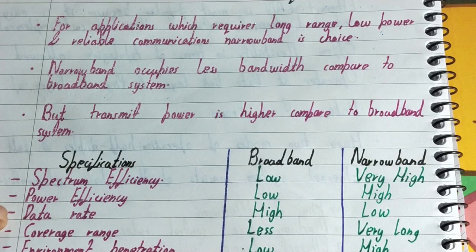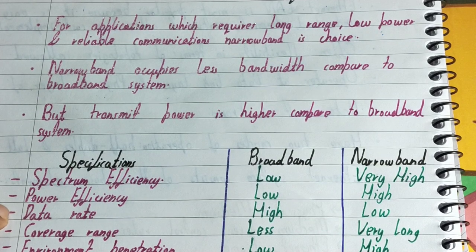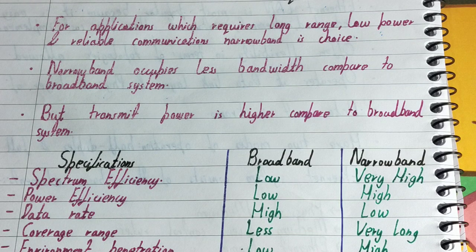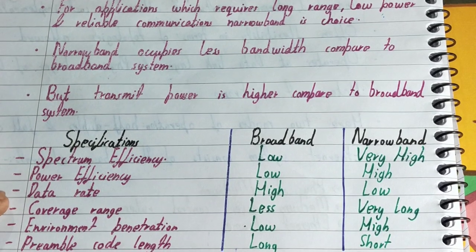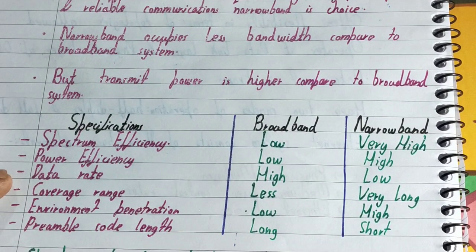In terms of data rate transmission, broadband is good and offers high data rate transmission, but narrowband offers low data rate transmission. That's why narrowband is suitable where you only need to transfer a small amount of data — for example, in telecommunications where you just send voice over devices.